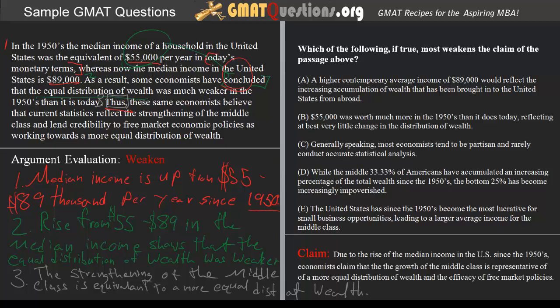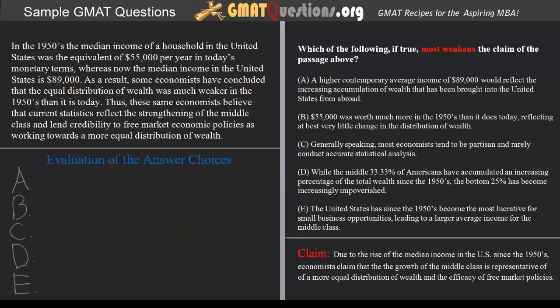So if we take the data and the claim together, what we get is the following: due to the rise of the median income in the U.S. since the 1950s, economists claim that the growth of the middle class is representative of a more equal distribution of wealth and the efficacy of free market economic policies. This is the claim that we're now going to go ahead and weaken. Let's evaluate each of the answer choices and determine which would most effectively weaken it.